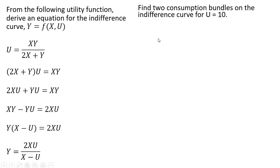Next thing we're going to do, let's find two consumption bundles on the indifference curve for U equals 10. So we take our indifference curve equation and we're going to set U equal to 10. Simplify it.